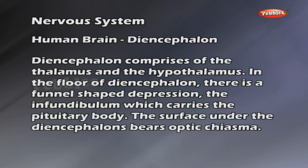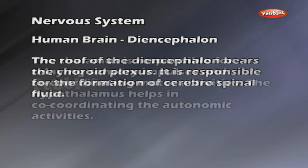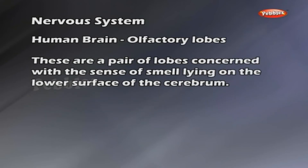Diencephalon comprises of the thalamus and the hypothalamus. In the floor of the diencephalon, there is a funnel-shaped depression, the infundibulum, which carries the pituitary body. The surface under the diencephalon bears optic chiasma. The roof of the diencephalon bears the choroid plexus, which is responsible for the formation of cerebrospinal fluid. The thalamus is responsible for relaying sensory impulses and coordinating motor activities. The hypothalamus helps in coordinating the autonomic activities. Olfactory lobes are a pair of lobes concerned with the sense of smell, lying on the lower surface of the cerebrum.